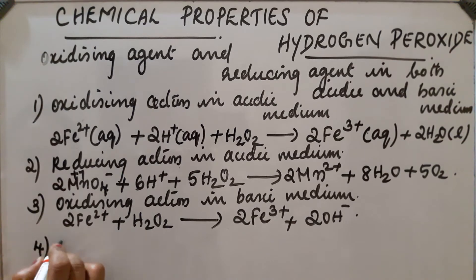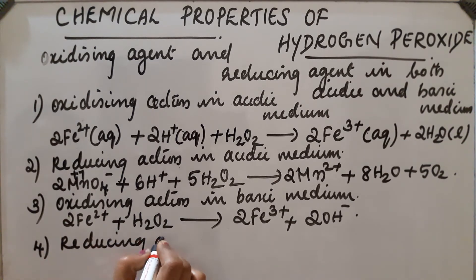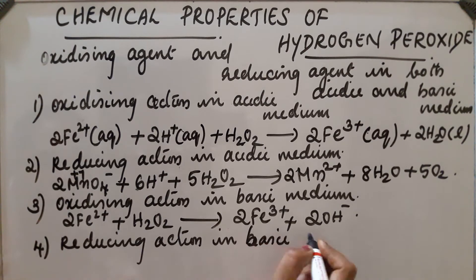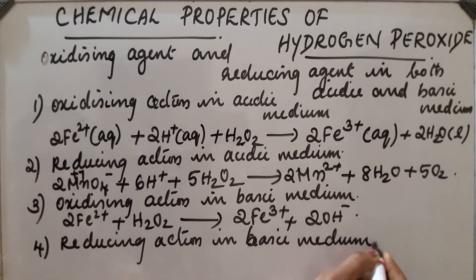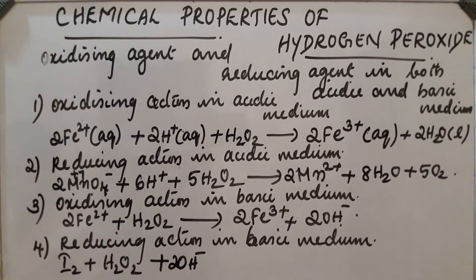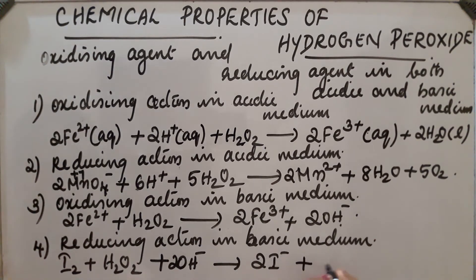Fourth case: reducing action in basic medium. Example: I₂ plus H₂O₂ — hydrogen peroxide reduces I₂ to I⁻ ion in basic media. Products: 2 I⁻ (reduction from 0 to −1) plus 2 H₂O plus O₂.